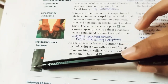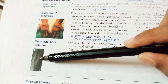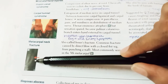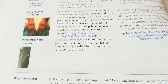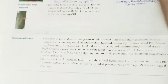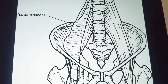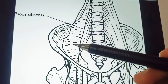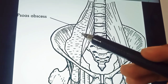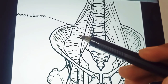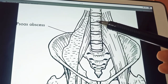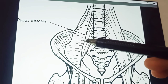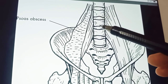Metacarpal neck fracture is called Boxer's fracture, typically affecting the fifth metacarpal (little finger). Now coming to iliopsoas abscess: there is pus collection in the iliopsoas compartment, which may spread hematogenously from adjacent structures such as vertebral osteomyelitis or tuberculosis spondylitis.